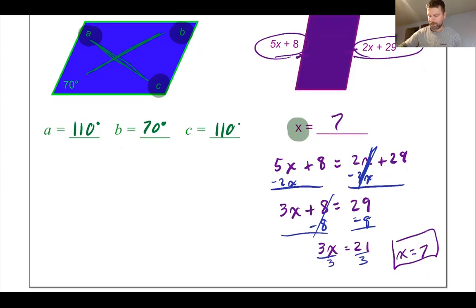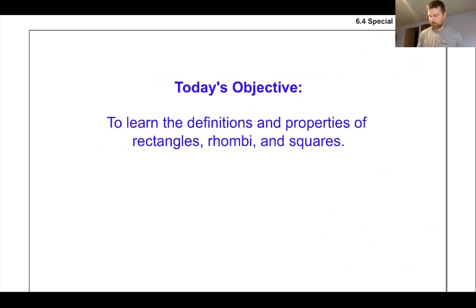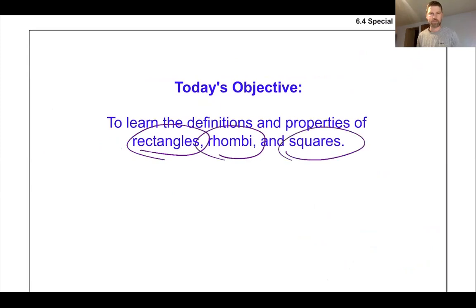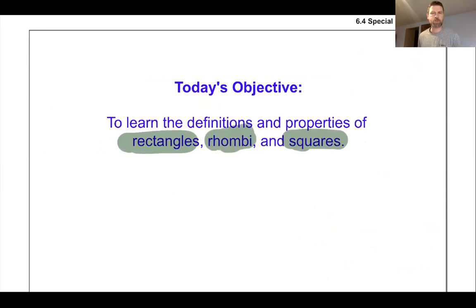Let's get to today's stuff. Today we're going to learn about some special parallelograms: rectangles, rhombi, and squares. Those are all parallelograms — they're just special types of them. You've probably heard of rectangles and squares. Rhombi is the plural for rhombus, which you may or may not have heard of.